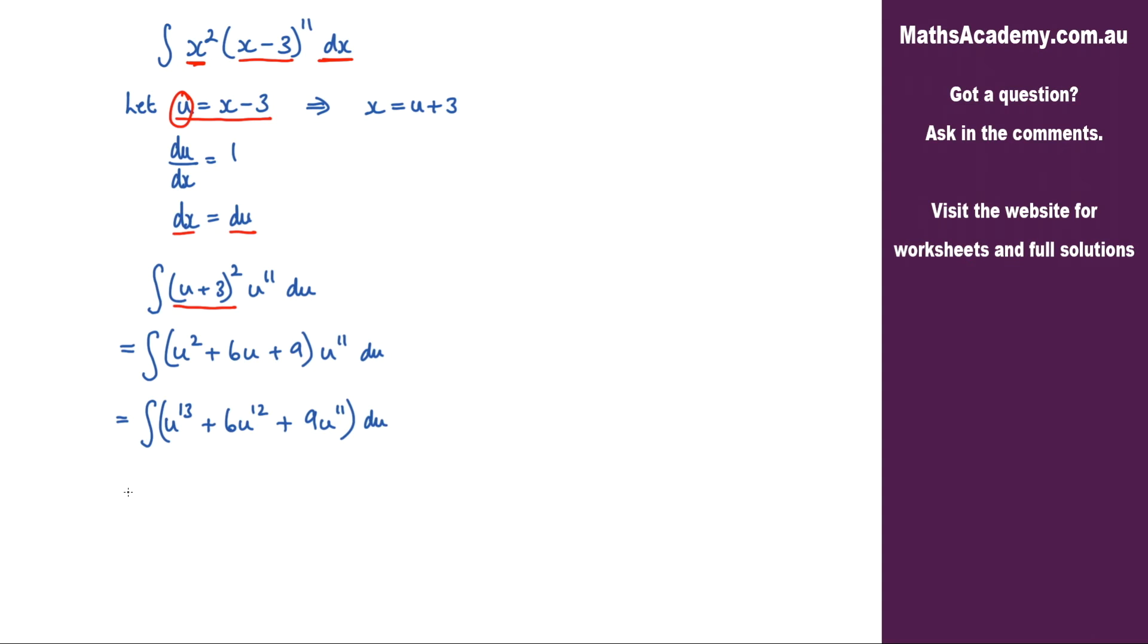Now this is fairly standard integration here, so what we have is u to the power of 14 over 14 plus 6u to the power of 13 over 13, and then we've got 9u to the power of 12 over 12. We just need to add on that constant of integration.